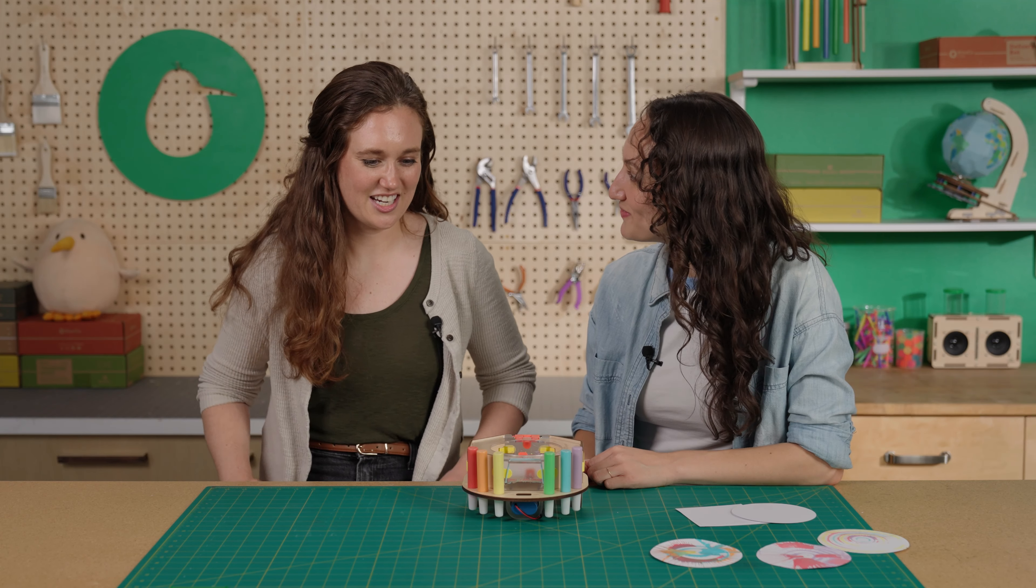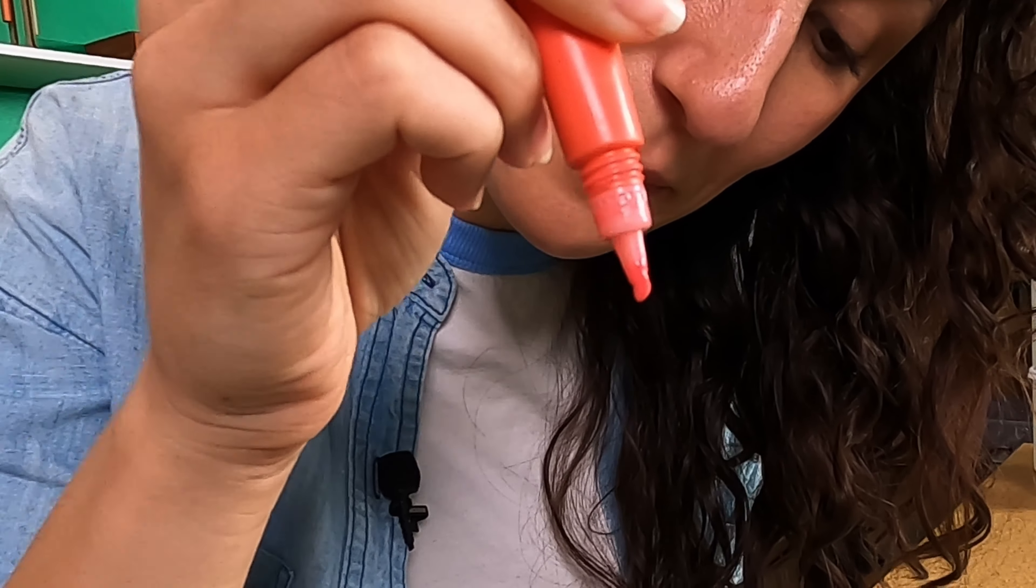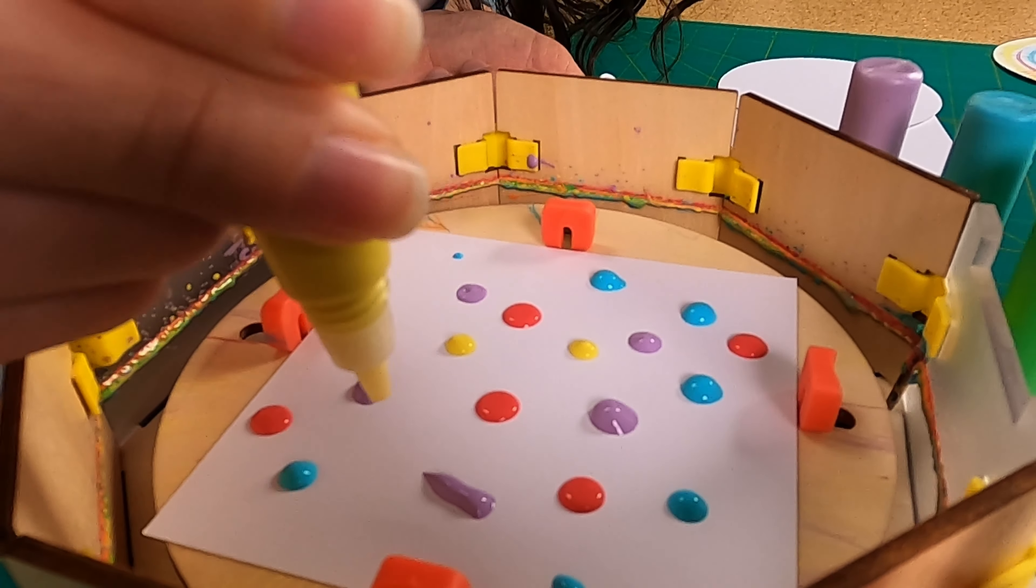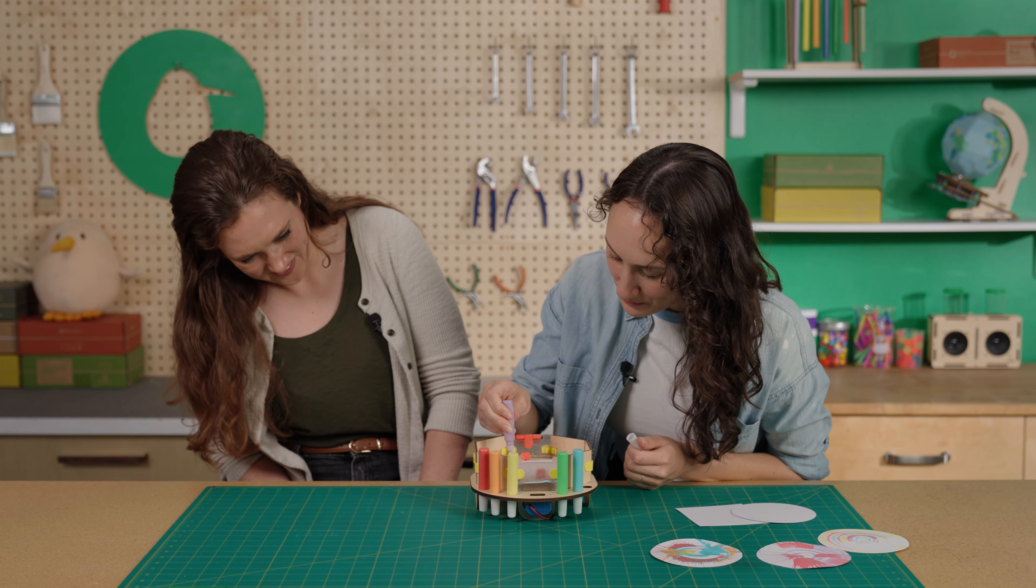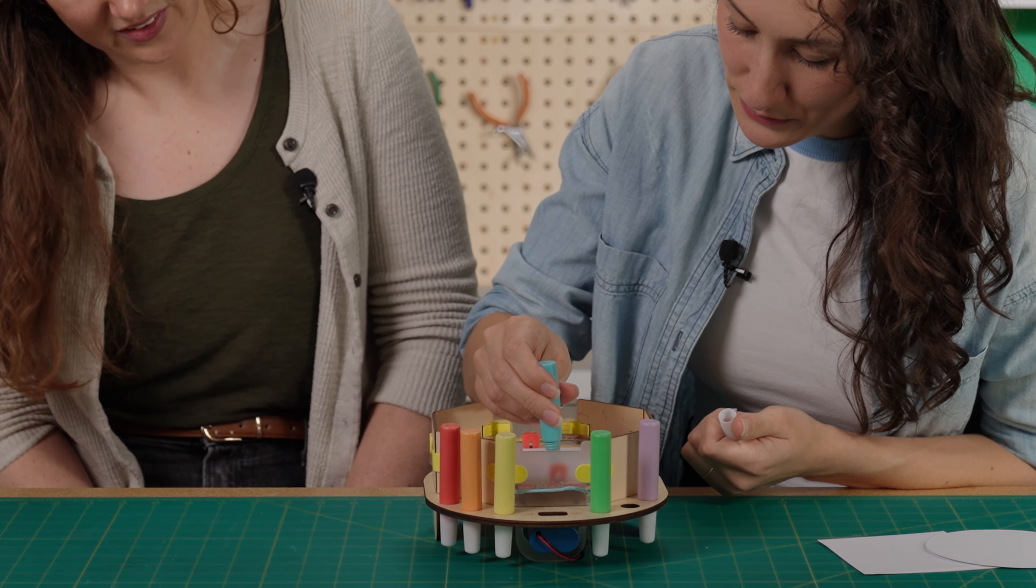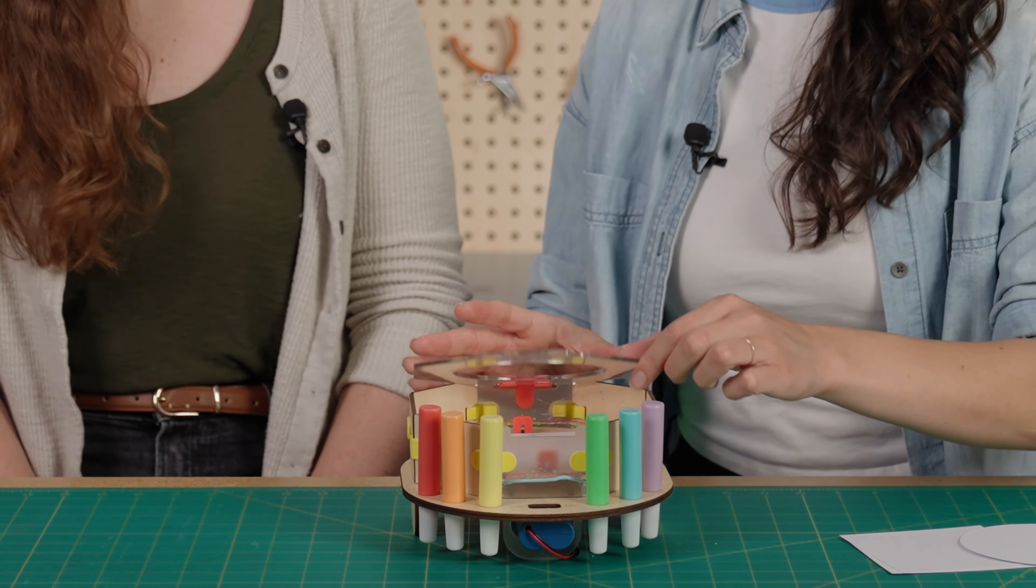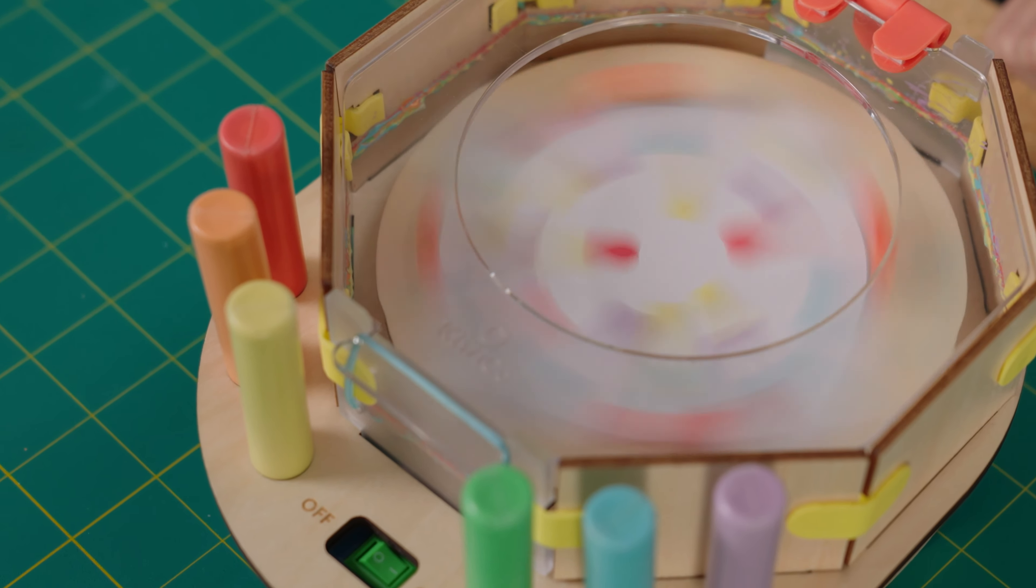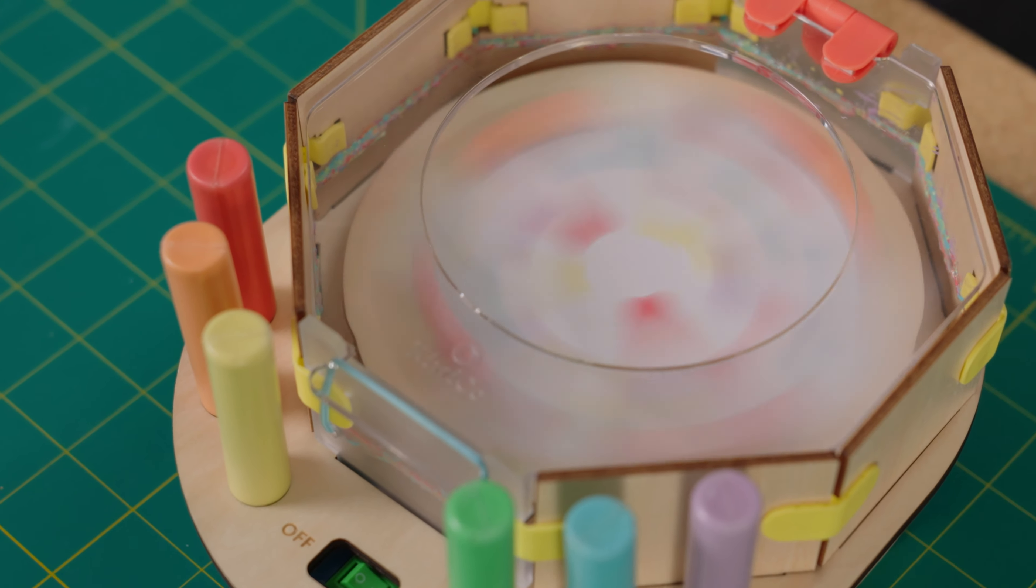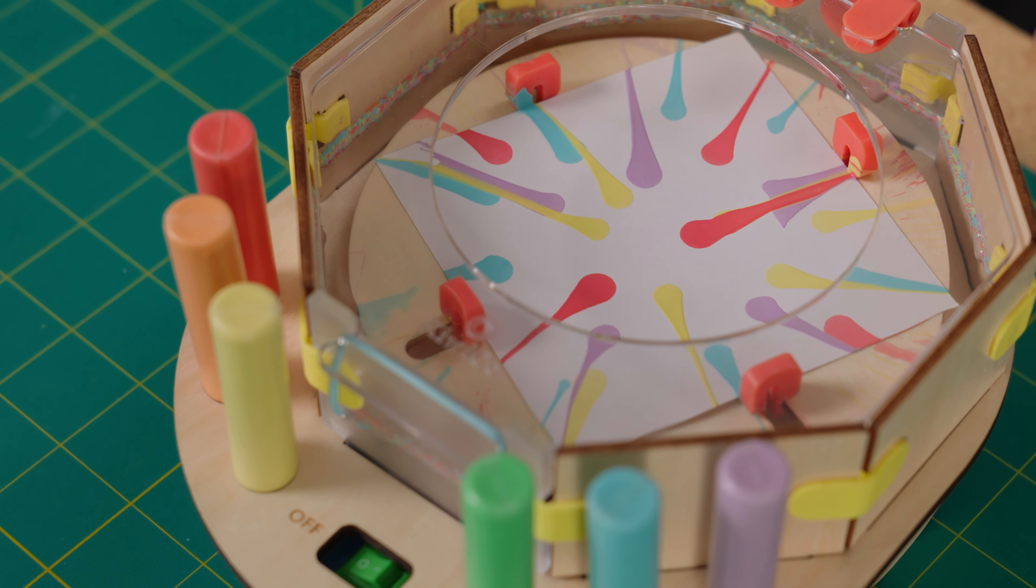Another fun thing to try is to add a bunch of blobs of paint onto the paper before you turn it on, and then turn it on to see what happens. Oh, cool. Mixing it up. Let's try it. Blob, blue, blob, blob, blob, blob, blob. Oh, cool. I can see it all spraying out to the sides and hitting the walls. Ooh. It looks like a bunch of shooting stars. Wow. That's so cool.